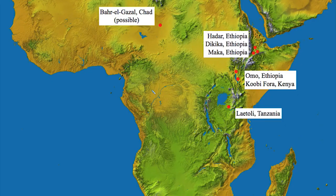Looking at this map, you see some of the major fossil localities associated with Australopithecus afarensis. A number of them are in the Afar region of Ethiopia, much like the site of Hadar, where Lucy was discovered. There are also other regions in the Turkana basin of Kenya and southern Ethiopia, such as Koobi Fora — a site we'll return to when we talk about the evolution of the genus Homo — and also the site Laetoli, which we'll discuss in reference to hominin bipedality in Australopithecines.